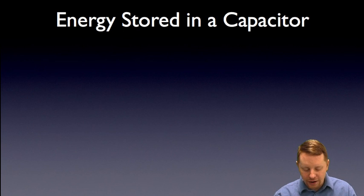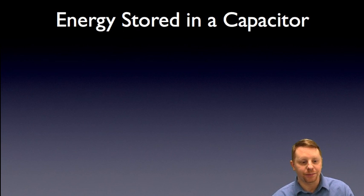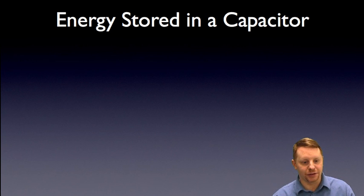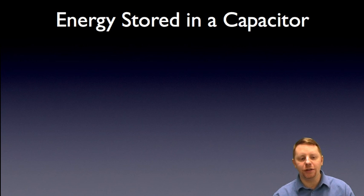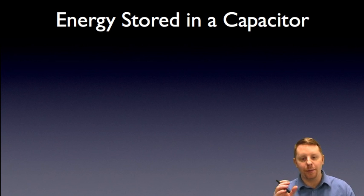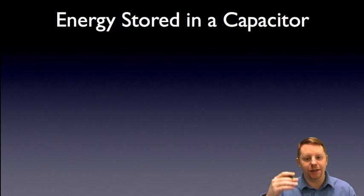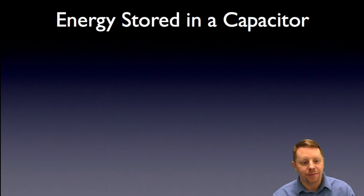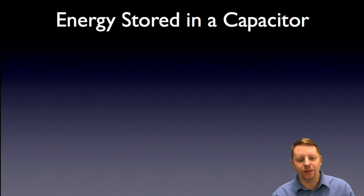Let's start by talking about the energy stored in a capacitor. Work is done in charging a capacitor — that's what allows it to store energy. If you consider two uncharged conductors in close proximity, the potential difference in moving some amount of charge Q from the negative to the positive plate must be Q over C. Moving more charge increases the potential, therefore the electric potential energy of the charge and the capacitor must also increase.